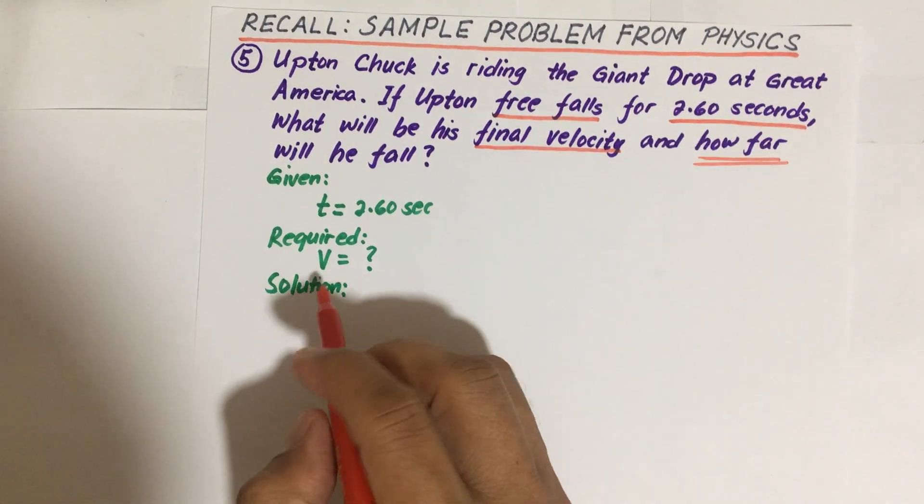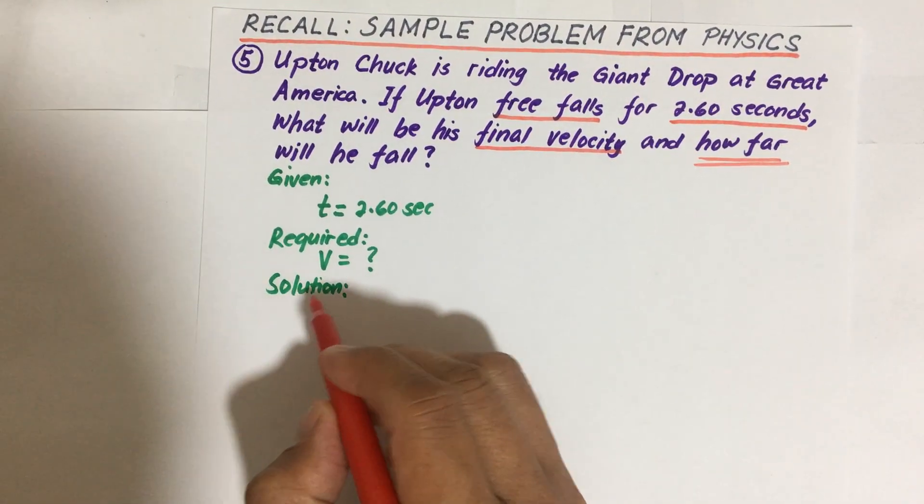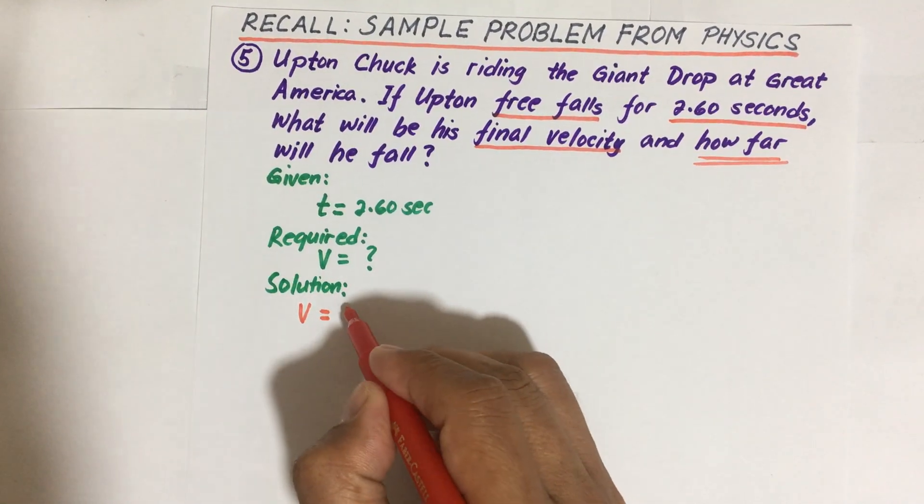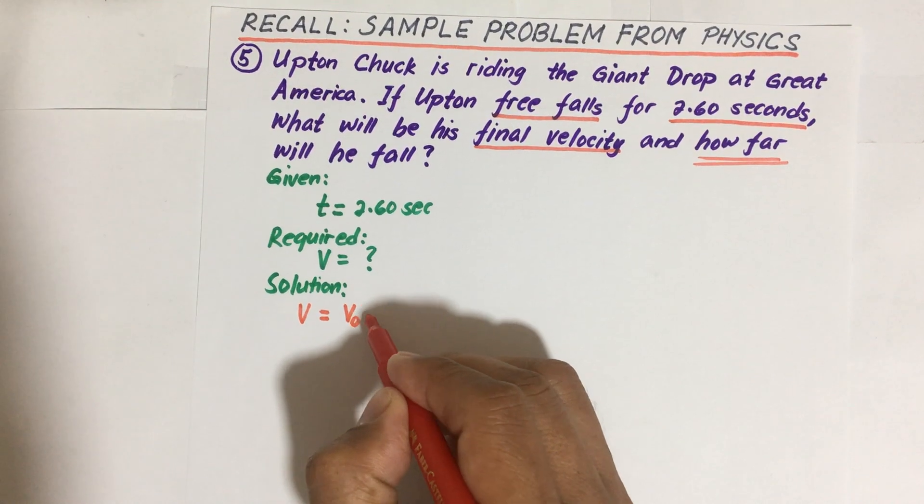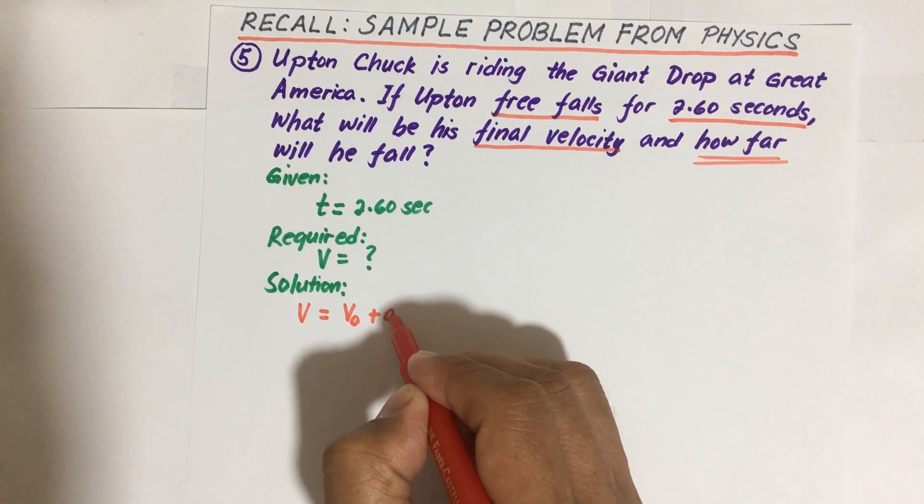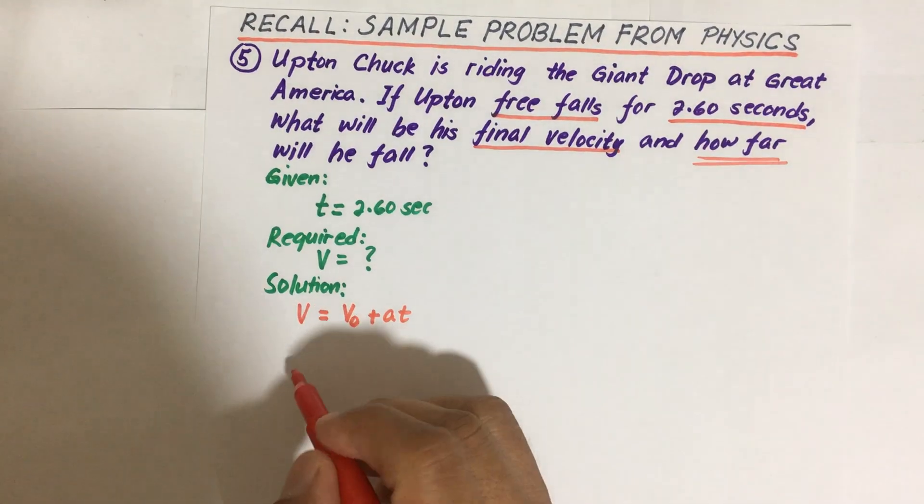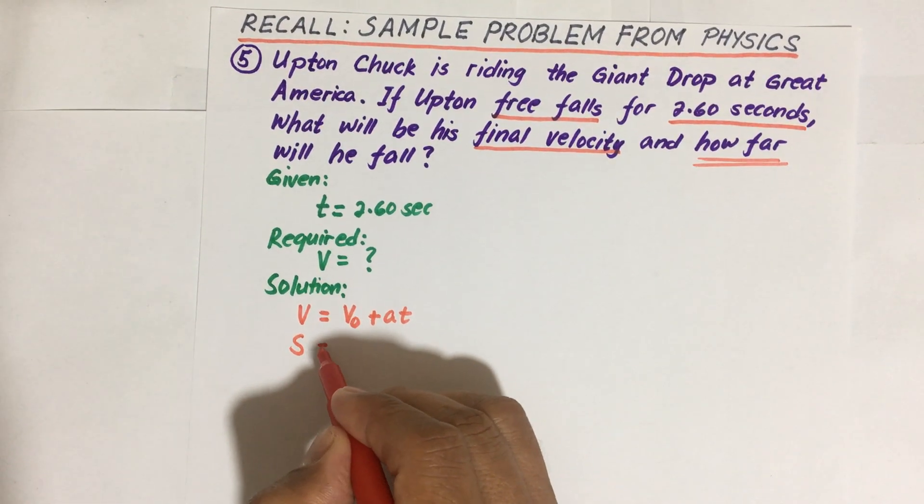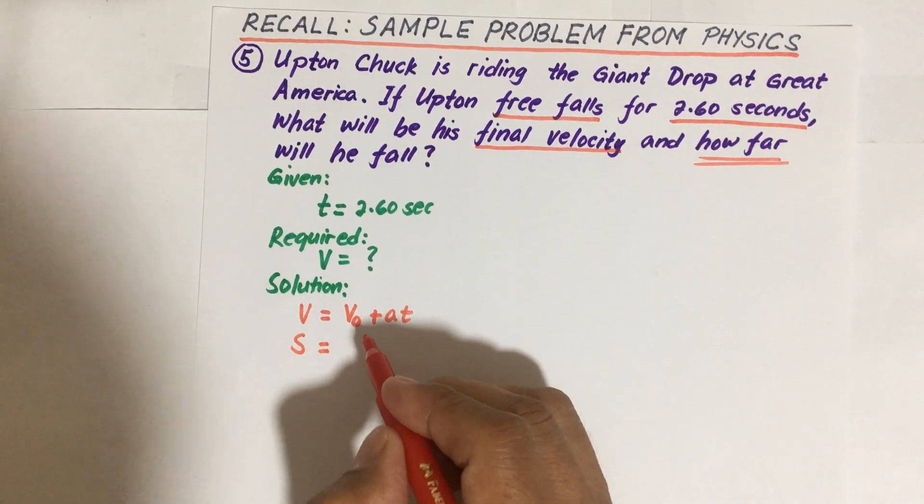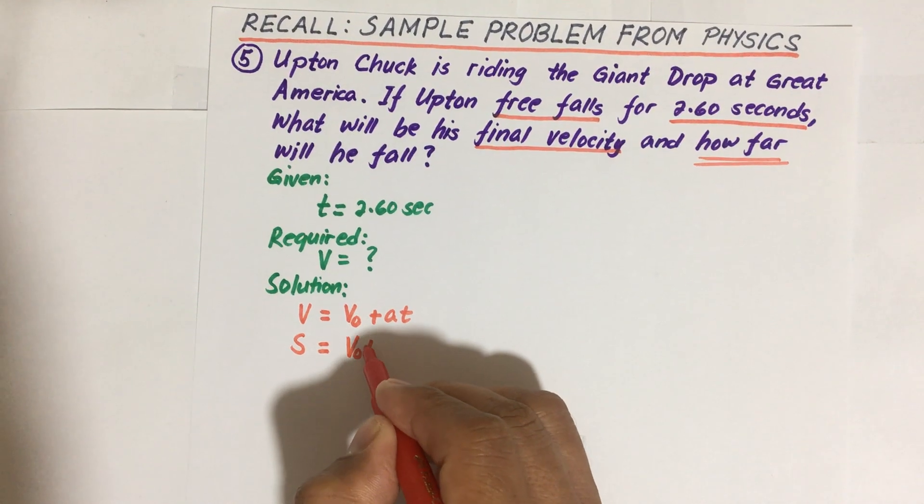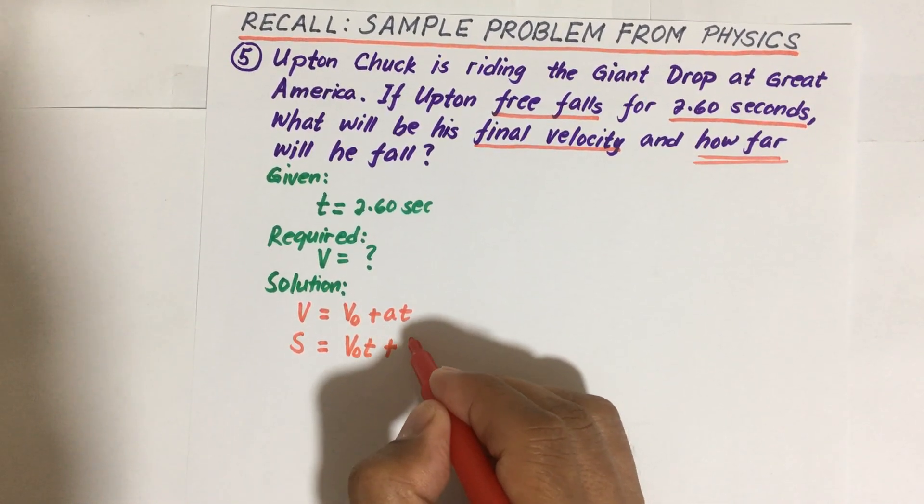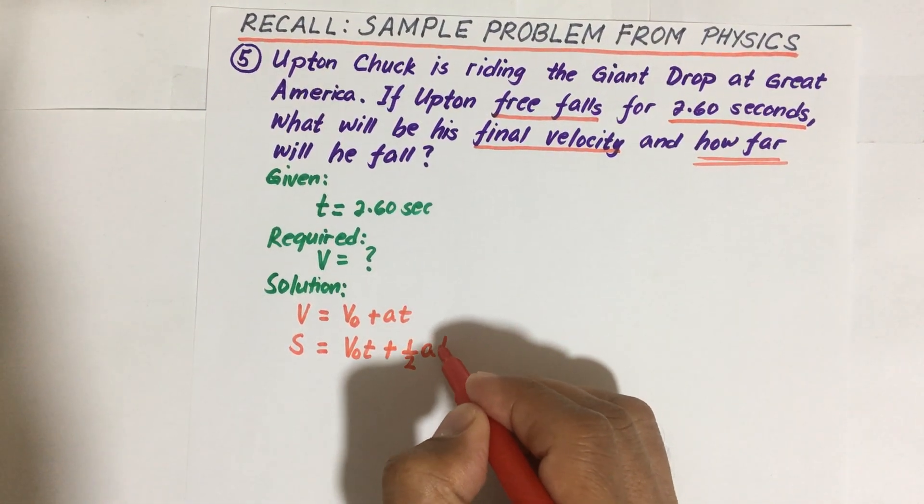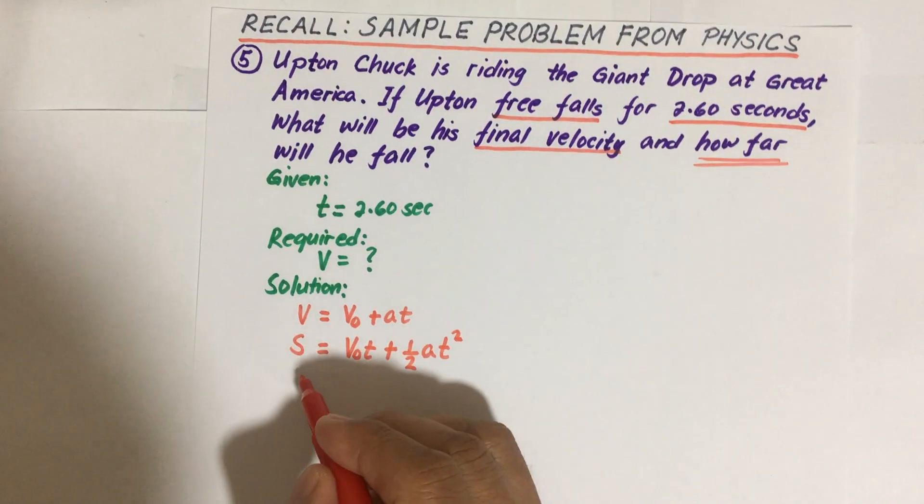We have the final velocity given as initial velocity plus the acceleration times time. And we also have another formula for uniform acceleration: S, which is the displacement, equals the initial velocity times time, then plus one half of the acceleration times the time squared.